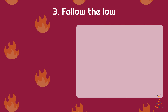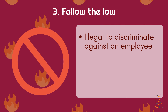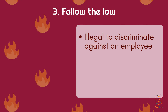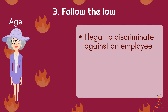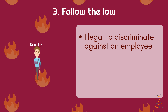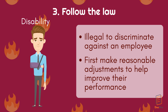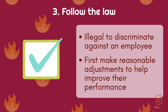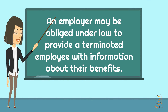Number three, follow the law. There may be situations when firing an employee becomes illegal. For example, discriminating against age, religion, race, and disability. If someone's performance is poor because of a disability, you should make reasonable adjustments first to help improve their performance. Also remember that an employer may be obligated under law to provide a terminated employee with information about their benefits, such as their last paycheck.